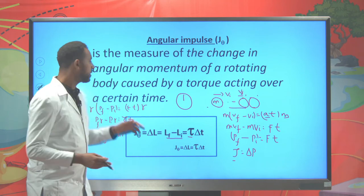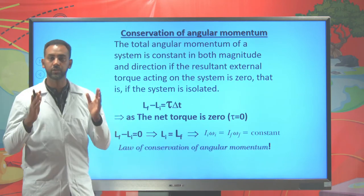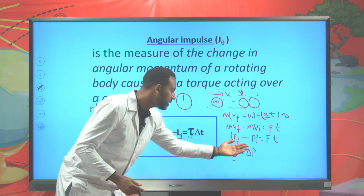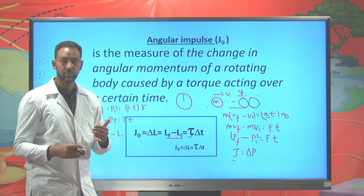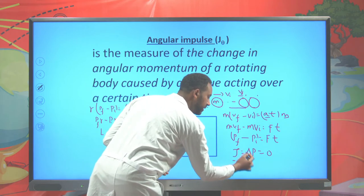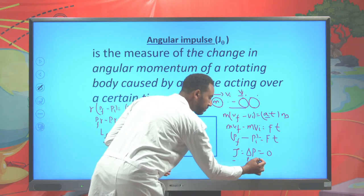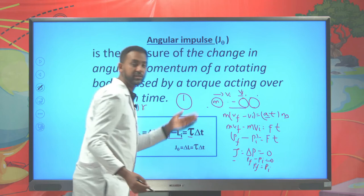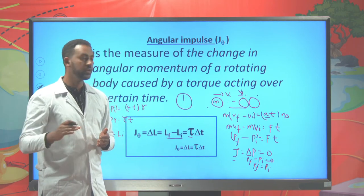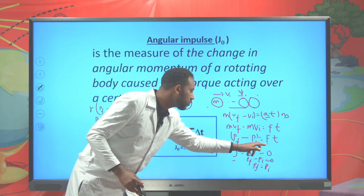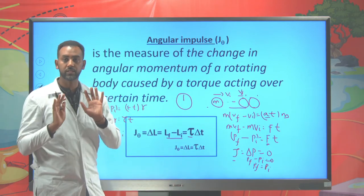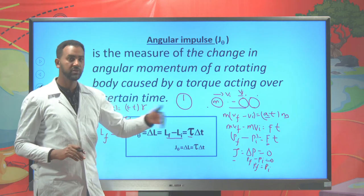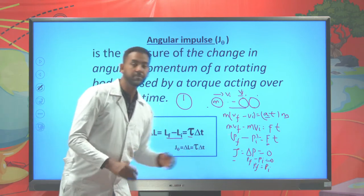Recall that in linear momentum there is conservation of linear momentum. Momentum is conserved when the impulse is zero — meaning the change of momentum is zero, so the final momentum equals the initial momentum. Momentum is conserved when the net external force on a given object is zero. Before and after an impact, momentum is said to be conserved.